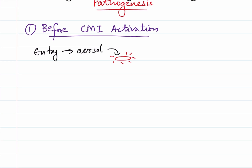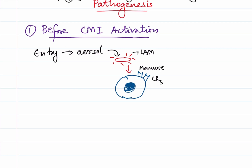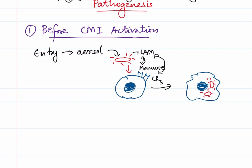The bacilli will pass through the upper respiratory tract and enter into the lungs, where they will encounter the pulmonary alveolar macrophages. These alveolar macrophages have two receptors of importance: first, the mannose receptors, and second, the complement receptors. The Mycobacterium tuberculosis contains LAM, that is Lipoarabinomannan, in its cell wall. This LAM will bind to the mannose receptors and to the CR3 receptors, causing the bacteria to get engulfed by the macrophages. This process is mediated by C3b opsonization.